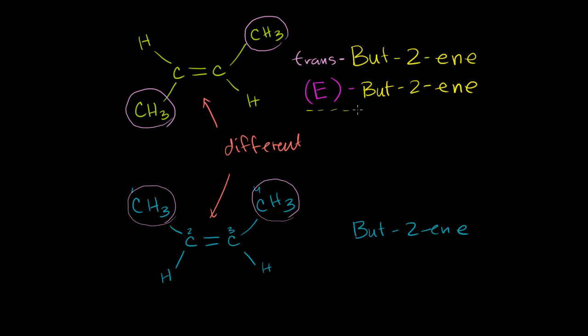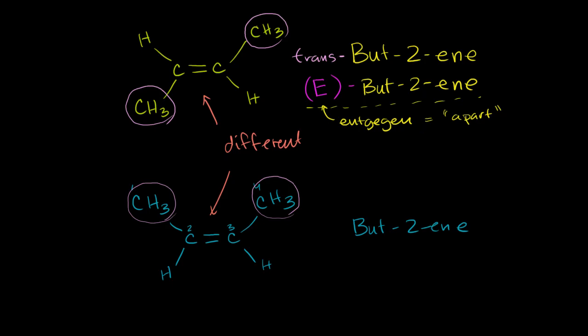But this is now kind of the standard convention. We'll see this notation where you use entgegen, or E, is actually more powerful. It can extend to when we have more than one functional group on each carbon. So let me just make it clear that the E stands for entgegen, which is German for apart. Or at least I believe it is. I can't speak German, so I'll just have to take people's words for it.